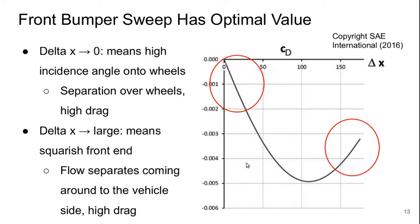As delta x becomes very small, the front end is angled as it approaches the wheels, and there'll be a high incidence angle onto them, so we're probably going to get separation over the wheels and therefore high drag. But a very large delta x means we've got a very squarish front end, and the flow is probably going to separate coming around to the vehicle side, again yielding higher drag. So there's a happy medium somewhere in the middle that minimizes it.